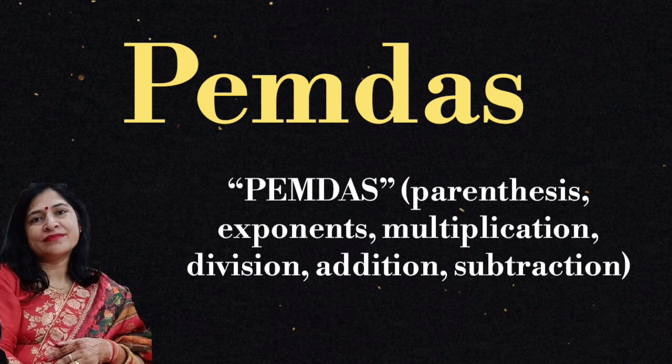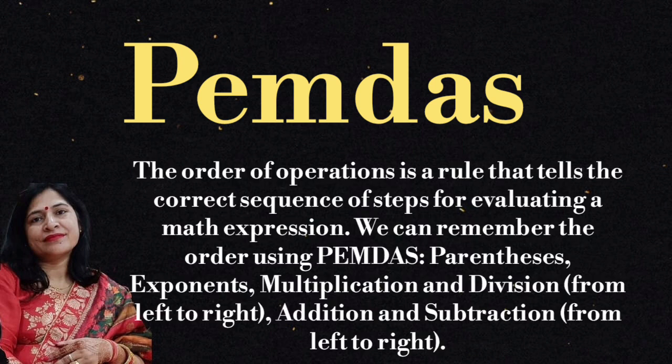PEMDAS: P for Parenthesis, E for Exponents, M for Multiplication, D for Division, A for Addition, and S for Subtraction. The order of operations is a rule that tells the correct sequence of steps for evaluating a maths expression.